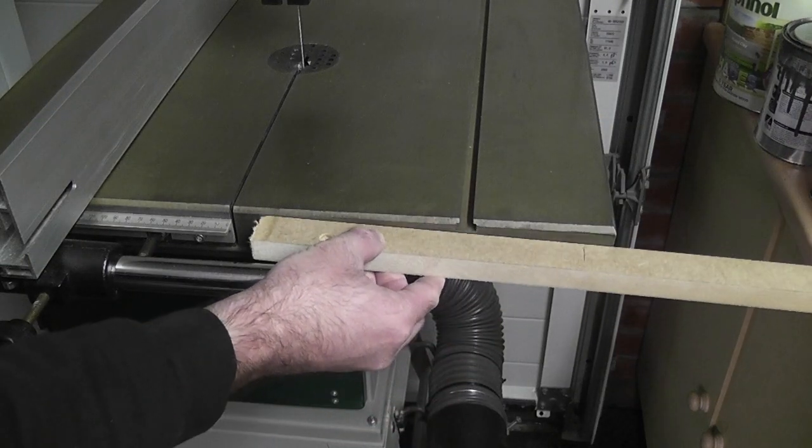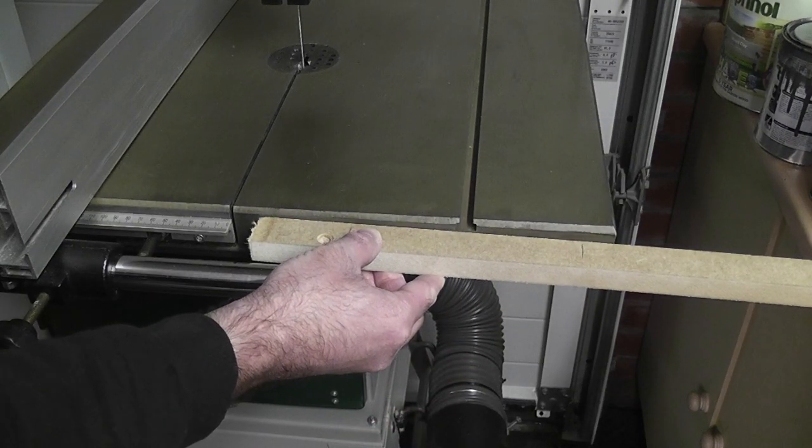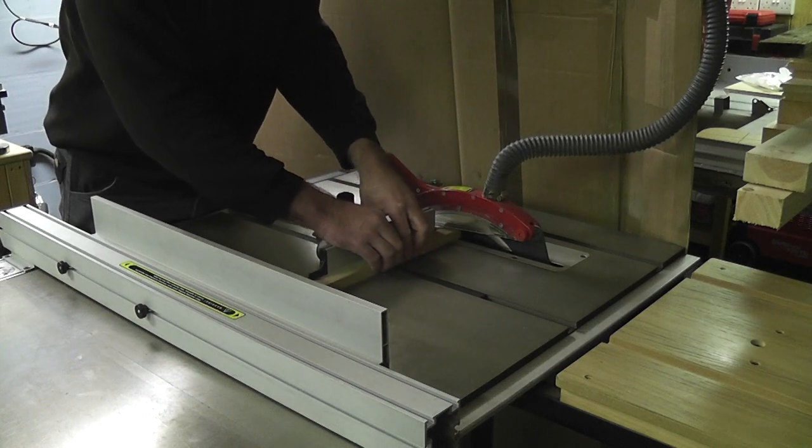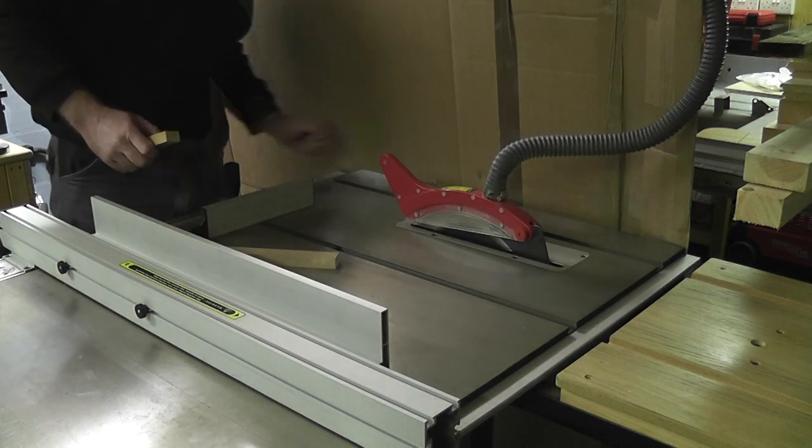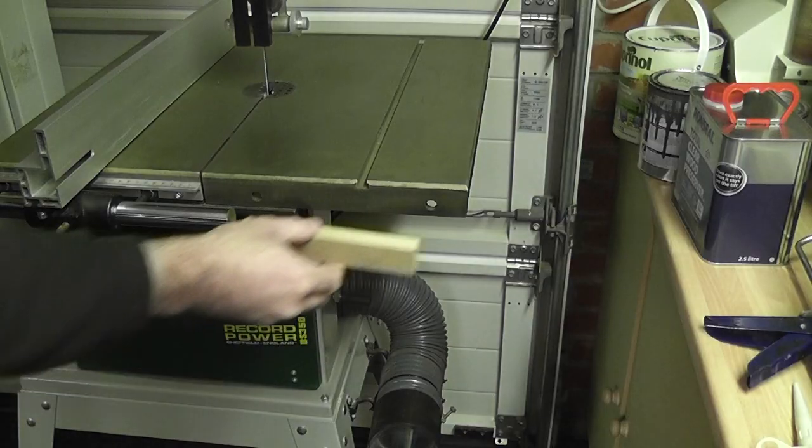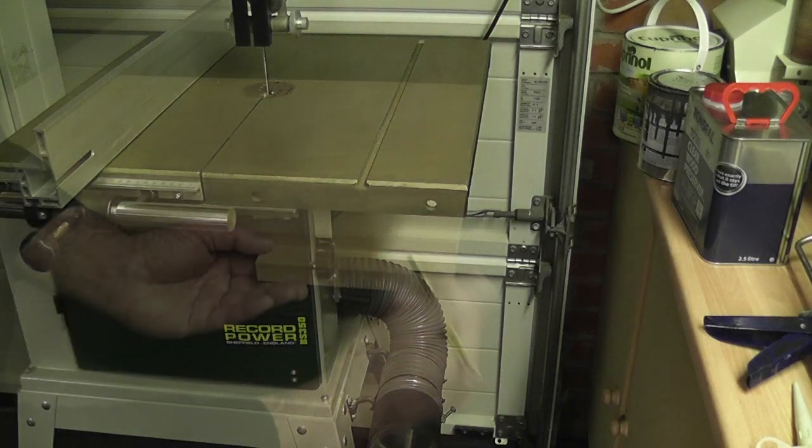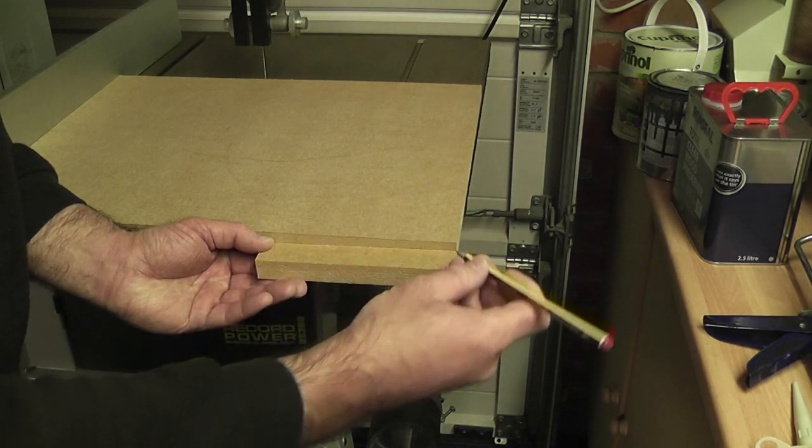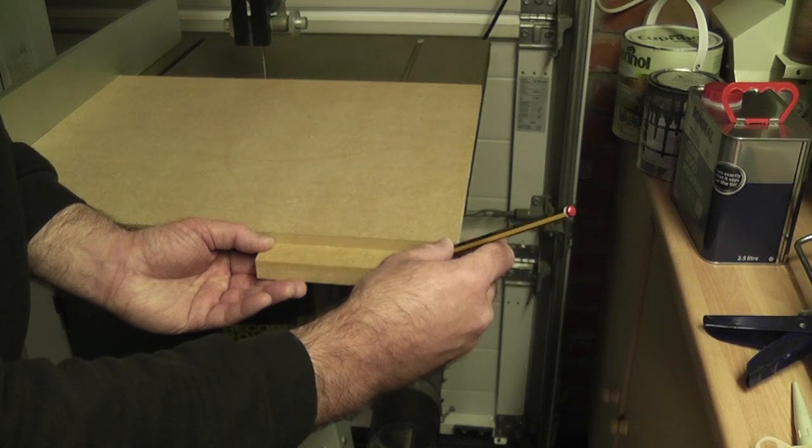I can use one of the pieces that I trimmed to make a stop for the end of the jig, instead of having to clamp it to the table. I've fastened this with screws to the jig after marking and pre-drilling the MDF so it doesn't split when the screws go in.